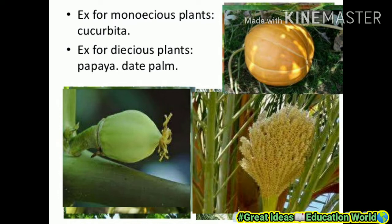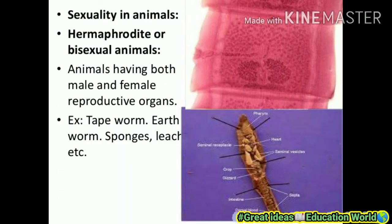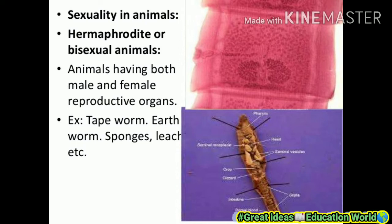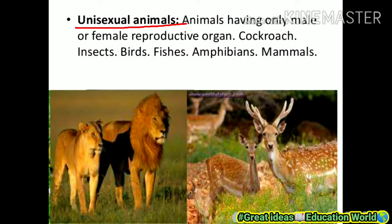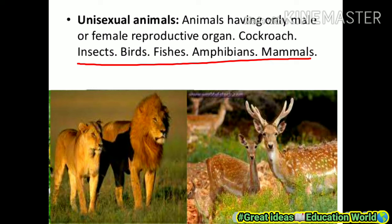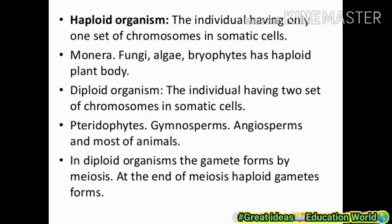Next, sexuality in animals. Hermaphrodite or bisexual animals have both male and female reproductive organs — example: earthworm. Animals having both male and female reproductive organs include tapeworm, earthworm, sponges, and leeches. Unisexual animals have only male or only female reproductive organs. Examples: cockroach, insects, birds, fishes, amphibians, and mammals.